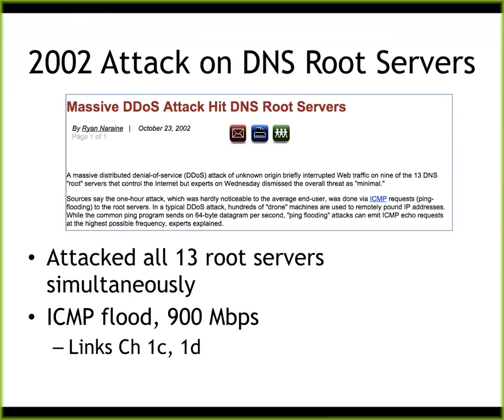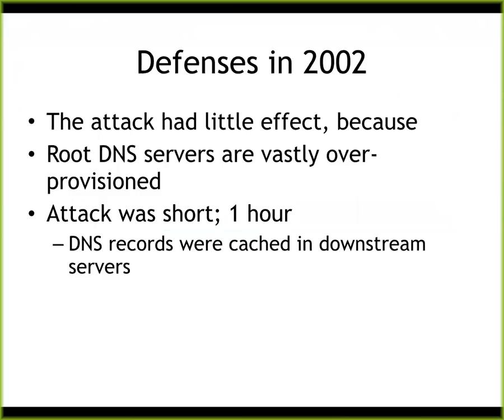One thing very common about cyber criminals is they brag. They pretend to be a lot more dangerous than they really are. They talk about exotic attacks, super powerful and everything, and it turns out the reality is quite a lot more modest. In 2002, this attack didn't have much effect because the DNS servers were over-provisioned — much more powerful than they needed to be — so they were running at much less than 50% capacity and could take a lot more.